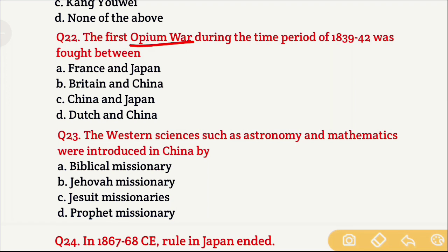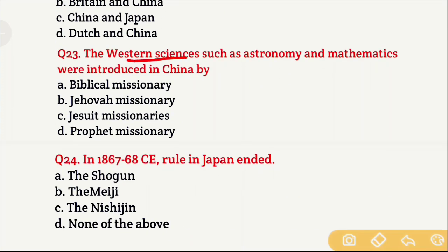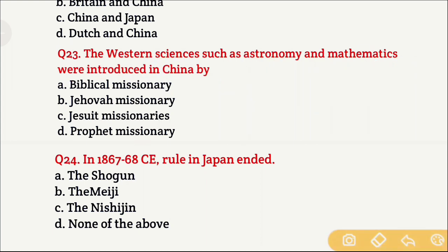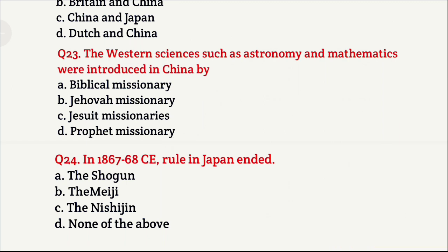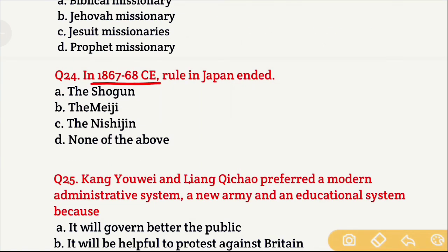Question 23: Western sciences such as astronomy and mathematics were introduced in China by — Option A is Biblical missionaries, Option B is Jehovah missionaries, Option C is Jesuit missionaries, and Option D is Prophet missionaries. The right answer is Option C, which is Jesuit missionaries.